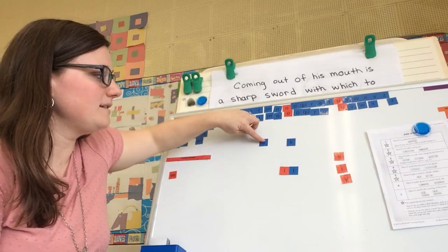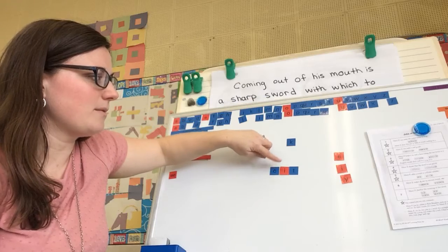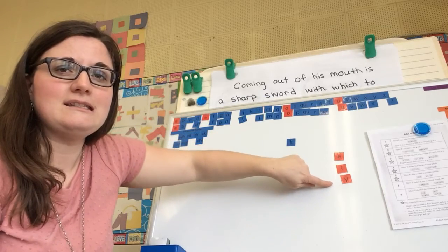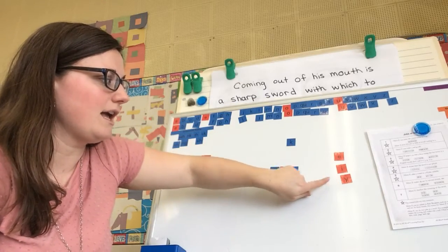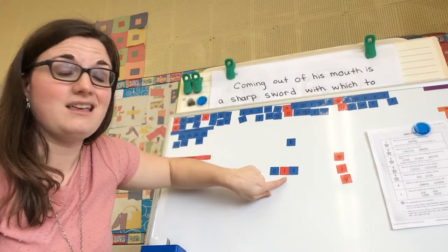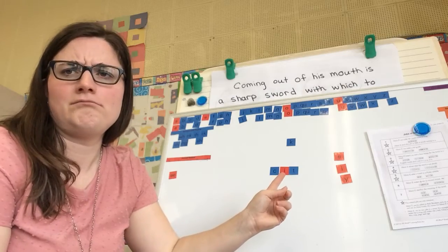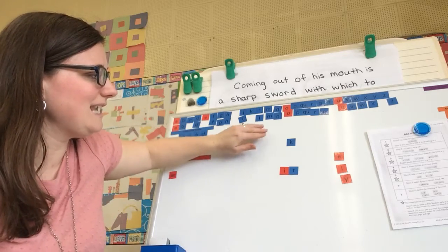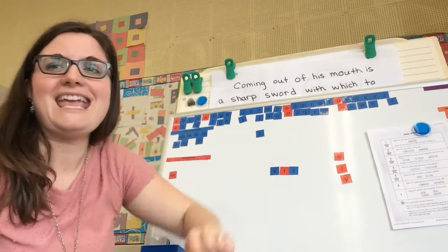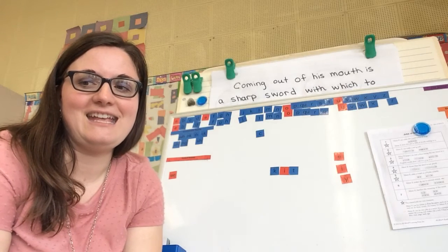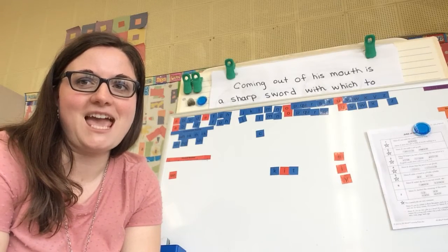If I pull my C down here, do you remember the rule? What does C say in front of E, I, or Y? Because this is an I. The C is going to say S. So this would be sit. That's not the word we want. We want kit. So we're going to pull the K down and put a K in there. Okay?